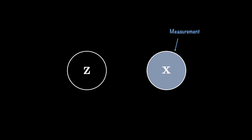Another symbol of interest is Z — a random variable. Since the circle is not filled, it is an unobserved random variable. In statistics, this type of random variable is called a latent random variable, and from the control theory viewpoint it is called state.